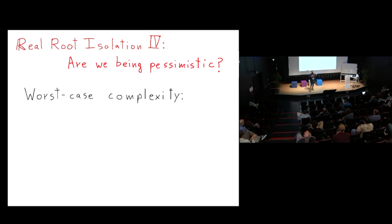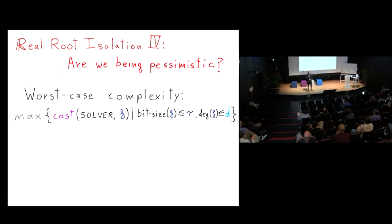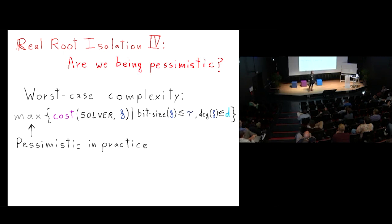Are we being pessimistic? In the usual worst-case complexity, we take the maximum cost over all polynomials with degree at most d and bit size at most tau — preparing for the worst possible situation. The issue is that when solving many polynomials, we care more about the total or average cost, not the worst single case.